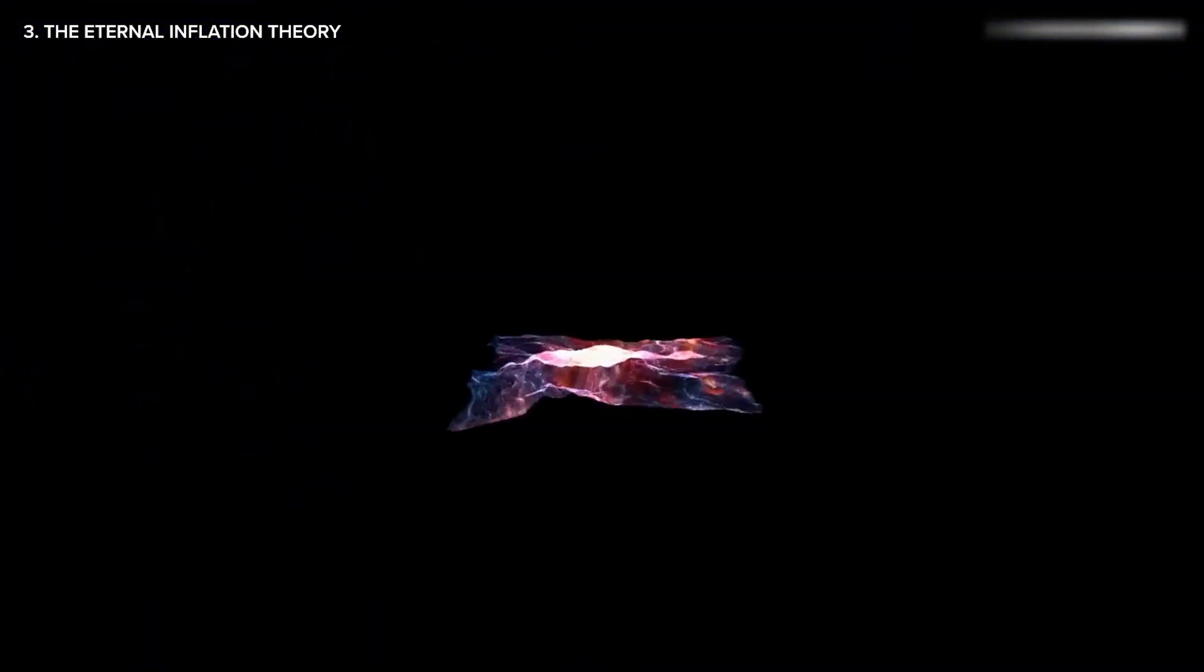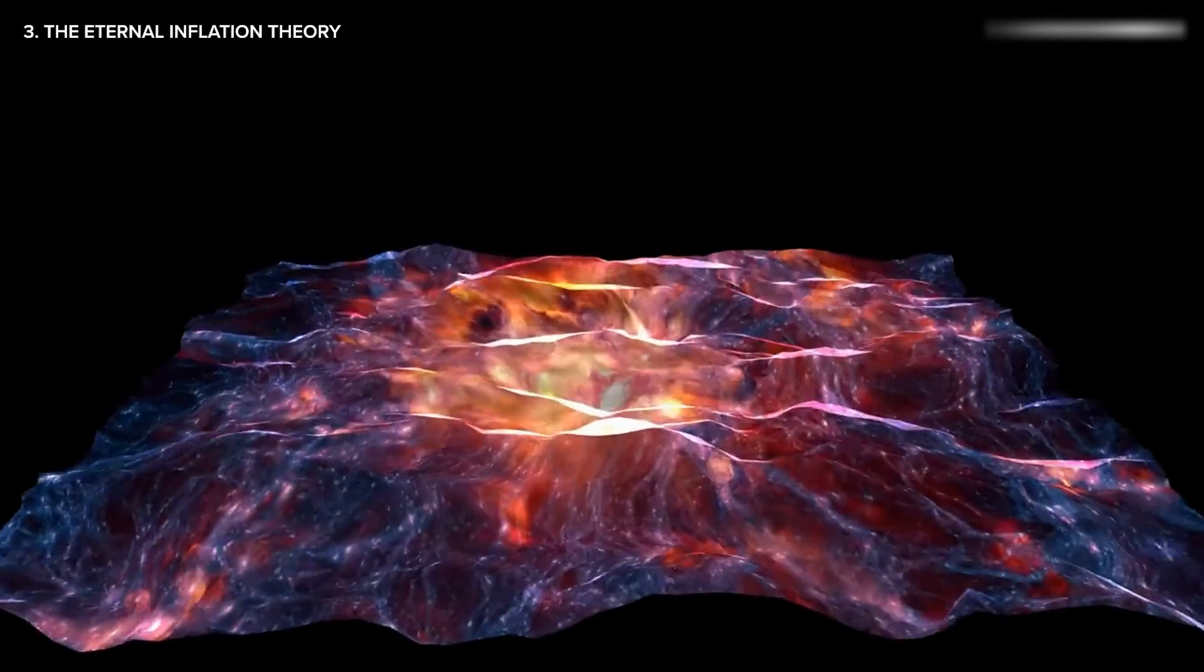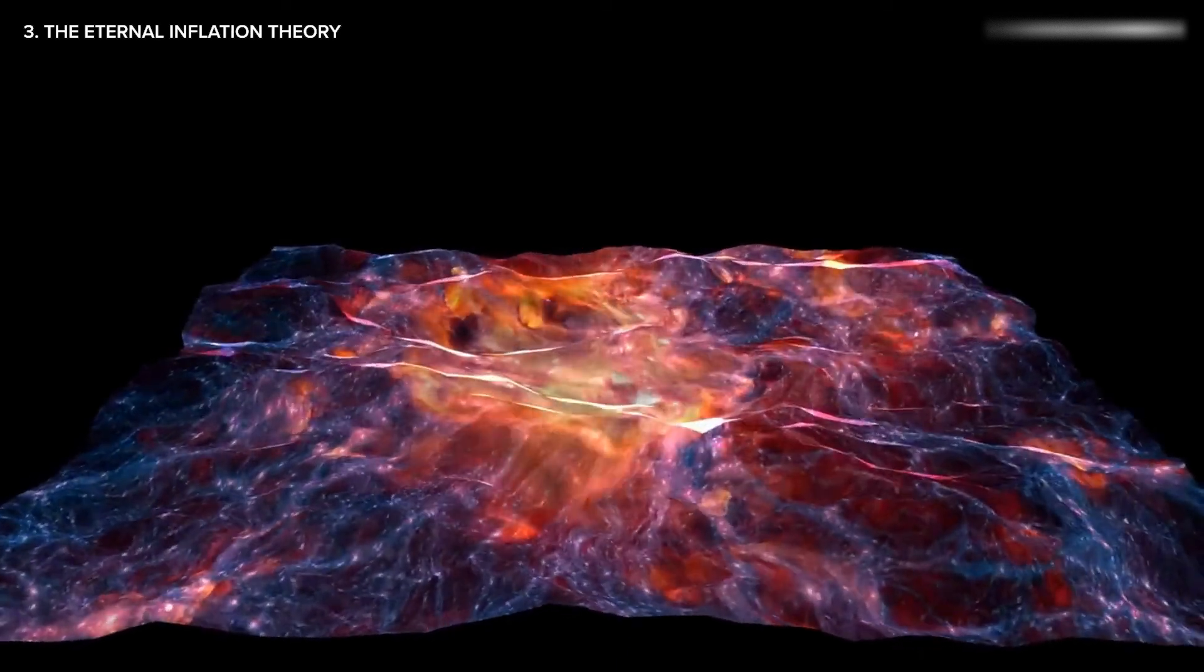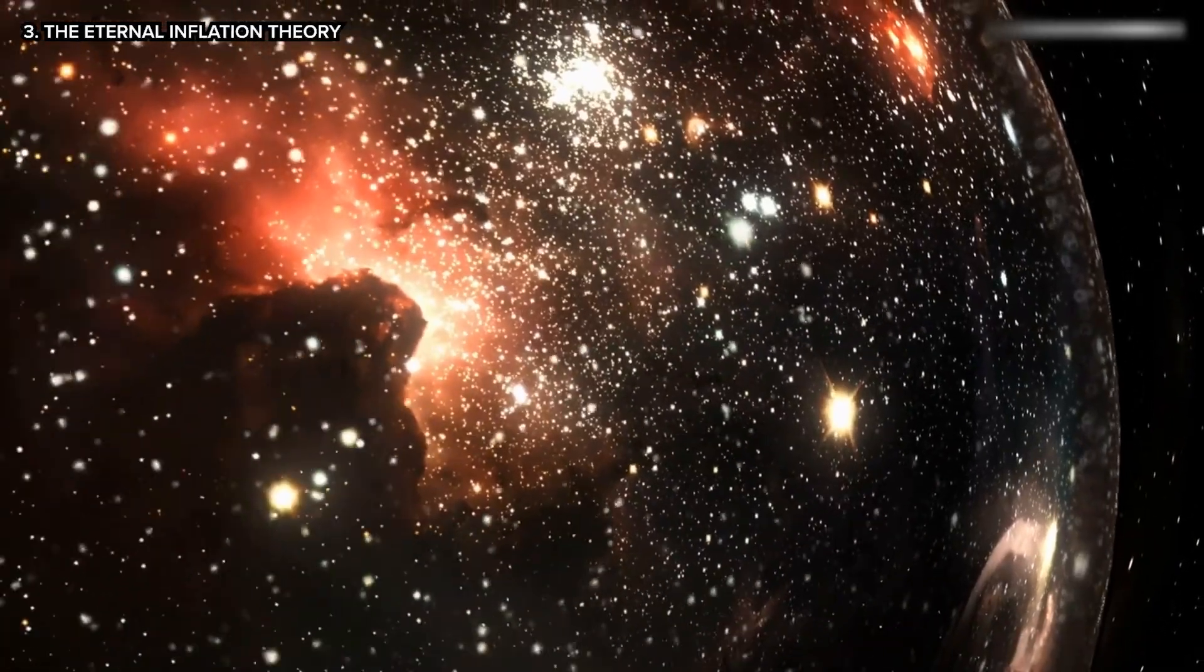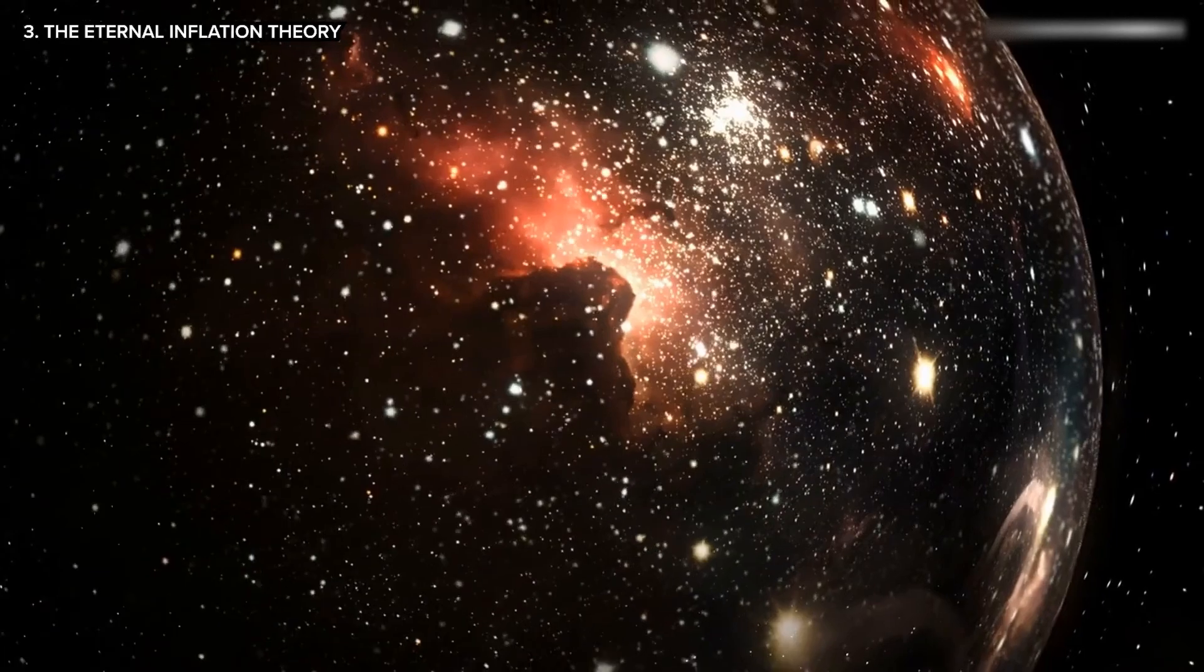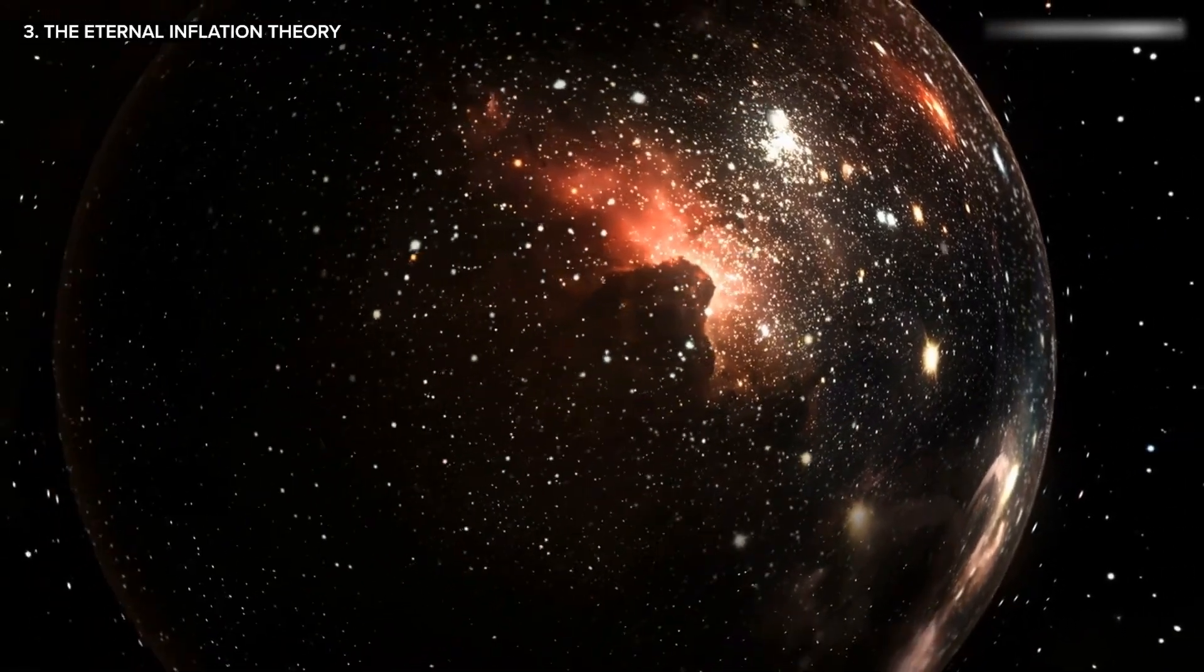This rapid expansion explains the even distribution of matter and the uniformity of the CMB. Eternal inflation suggests that while our universe's inflationary expansion slowed down, other regions of space are still expanding rapidly. Each of these regions form a separate bubble universe with its own physical characteristics.